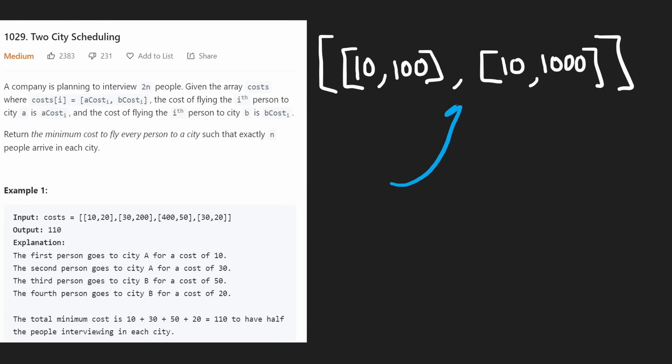Consider a pretty simple example like this one, where we have two people. For the first person, we can send them to city A for a cost of 10 or to city B for a cost of 100. Similarly, the second person can be sent to city A for a cost of 10, and to city B for a cost of 1000. To minimize the cost, it's obvious we would send both people to city A, but we have to send at least one of them to city B.